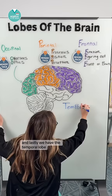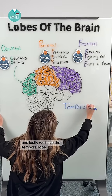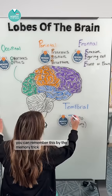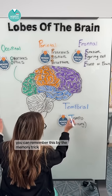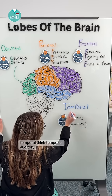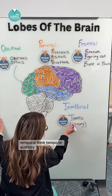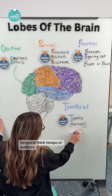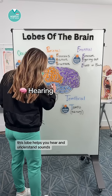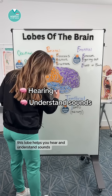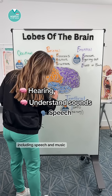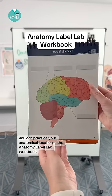And lastly, we have the temporal lobe. You can remember this by the memory trick: temporal — think 'tempo' or 'auditory.' This lobe helps you hear and understand sounds, including speech and music.